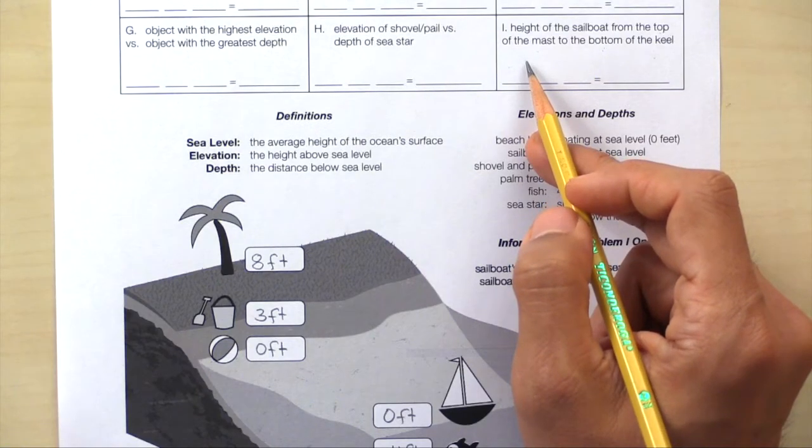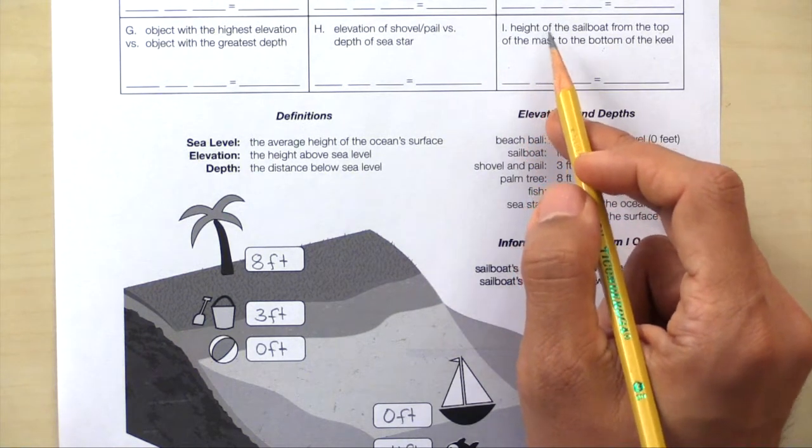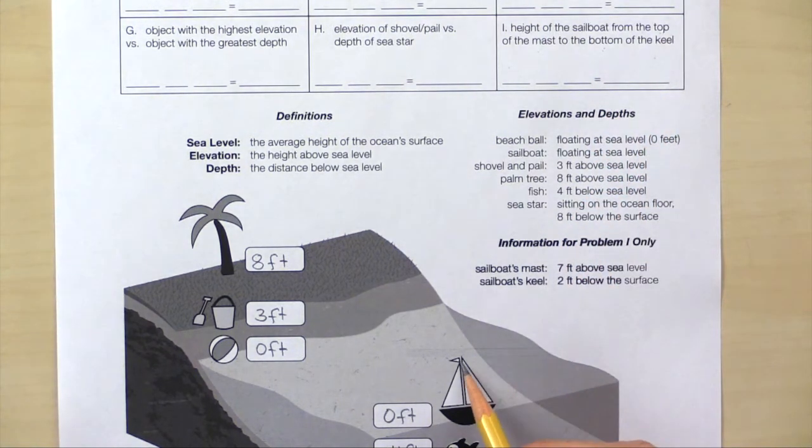Last example, let's do box I. In box I, we need information that's not in the diagram. Height of the sailboat from the top of the mast to the bottom of the keel. Here's the top of the mast. There's the bottom of the keel.